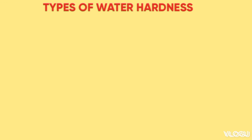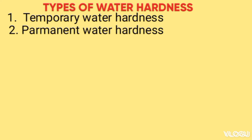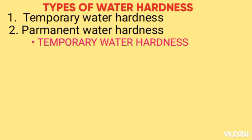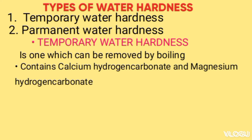Types of water hardness include temporary water hardness and permanent water hardness. Temporary water hardness is one which can be removed by boiling and contains calcium hydrogen carbonate and magnesium hydrogen carbonate.